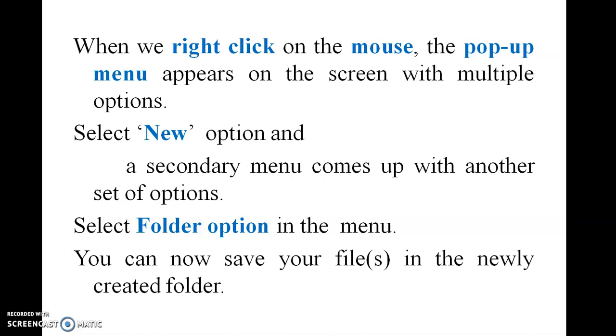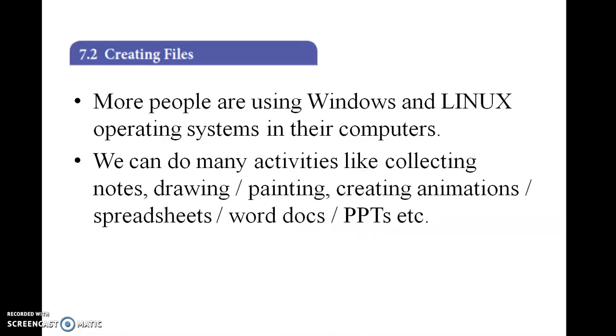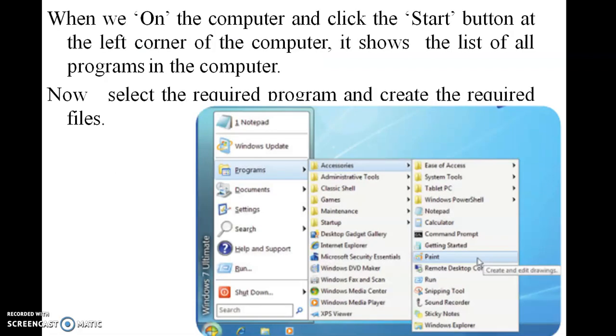Creating files: there are so many options to create files - drawing, painting, creating animation, spreadsheet, and pads. These are the many things you can do. Where do we have to take the paint? You have to go to the Start menu, in that you have to go to the programs, from the program Accessories, from the Accessories you have to go to the Paint option.